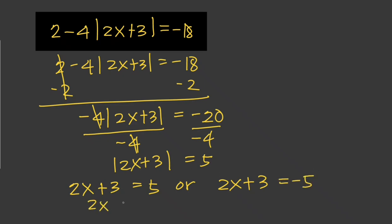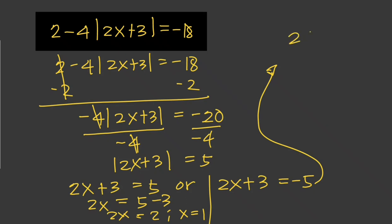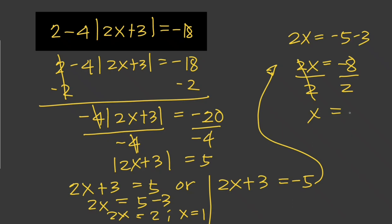Solving for x: for the first case, 2x equals 5 minus 3, so 2x equals 2, and x equals 1. For the second case, 2x equals negative 5 minus 3, so 2x equals negative 8 divided by 2, giving x equals negative 4. So our solutions are x equals 1 and x equals negative 4.